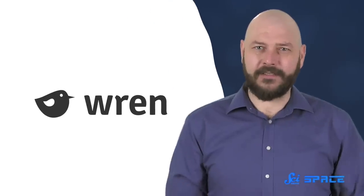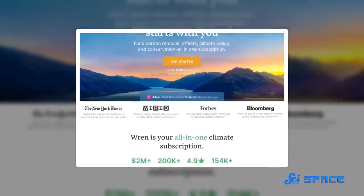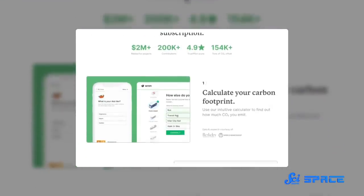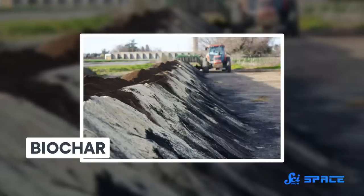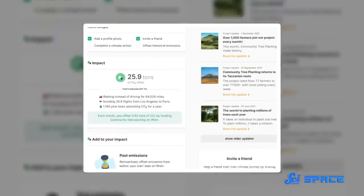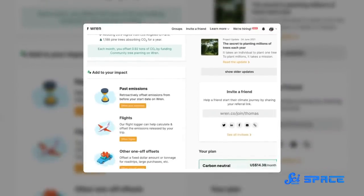No one can stop the climate crisis on their own, but there are steps we all can take. Wren is a website that helps you calculate your carbon footprint and offers options for how to offset it. For example, you can help fund their Biochar project in Southern California, which removes biomass from fire-prone areas and converts it into a stable form of carbon out of the atmosphere. Once you sign up to make a monthly contribution to offset your carbon footprint, you'll receive monthly updates from the tree planting, rainforest protection, and other projects you support.